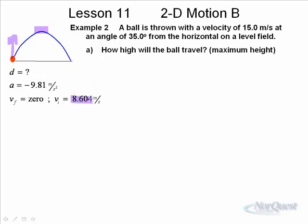But as the object rises, it will slowly come to a stop vertically. And then, of course, it'll start coming back down. In fact, when it hits the ground, it'll be going 8.604 meters per second downward. But to find the displacement vertically, that is the maximum displacement, we solve for d. We know that acceleration is negative 9.81. We know that the final velocity is zero. We know the initial velocity is 8.604. So it's fairly easy to choose an equation. Choose the one without time.